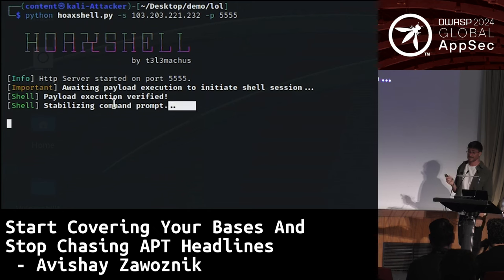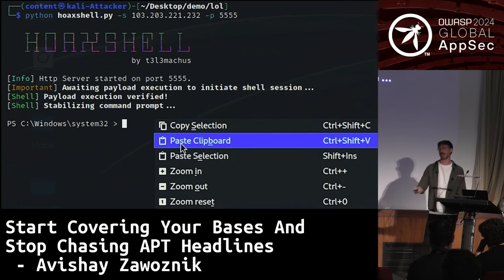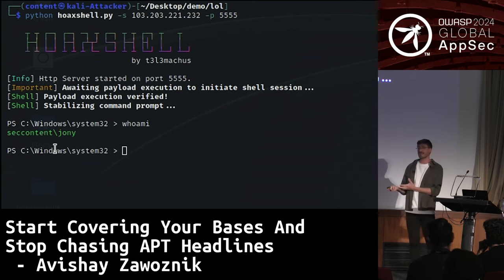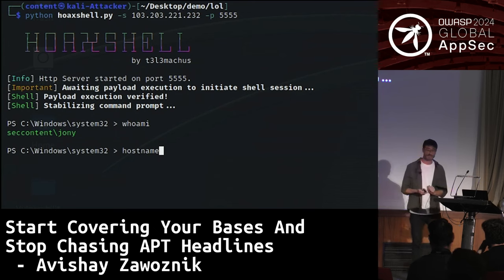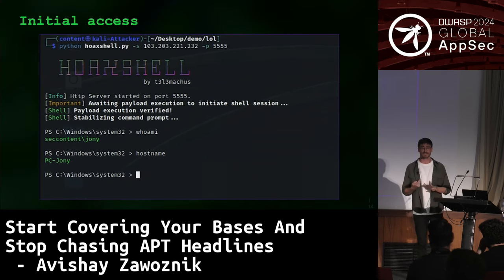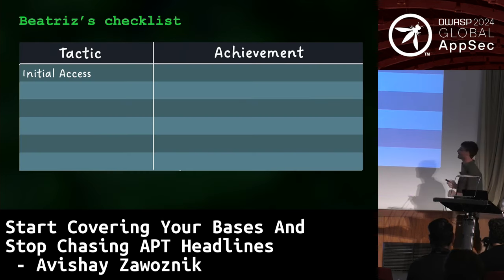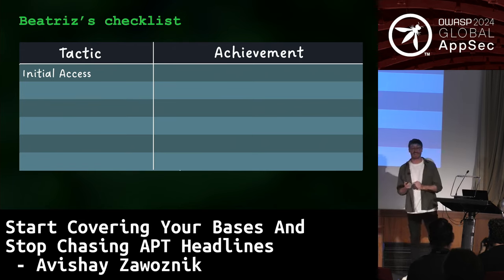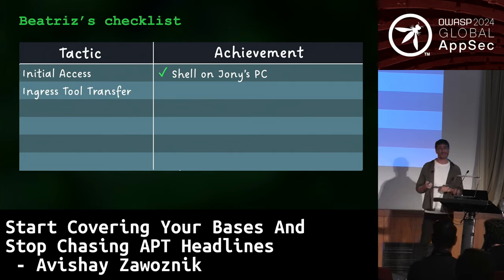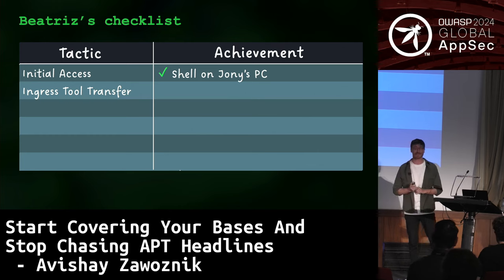Once Johnny clicks, Beatrice observes that she has a shell on someone's computer. She checks who it is — this is the reconnaissance phase. She sees it's Johnny, hostname BC-Johnny, whom she remembers from the phishing email. Beatrice is well-organized: she has a checklist, and initial access is now checked. She's also following the MITRE taxonomy for tactics — very well-educated.